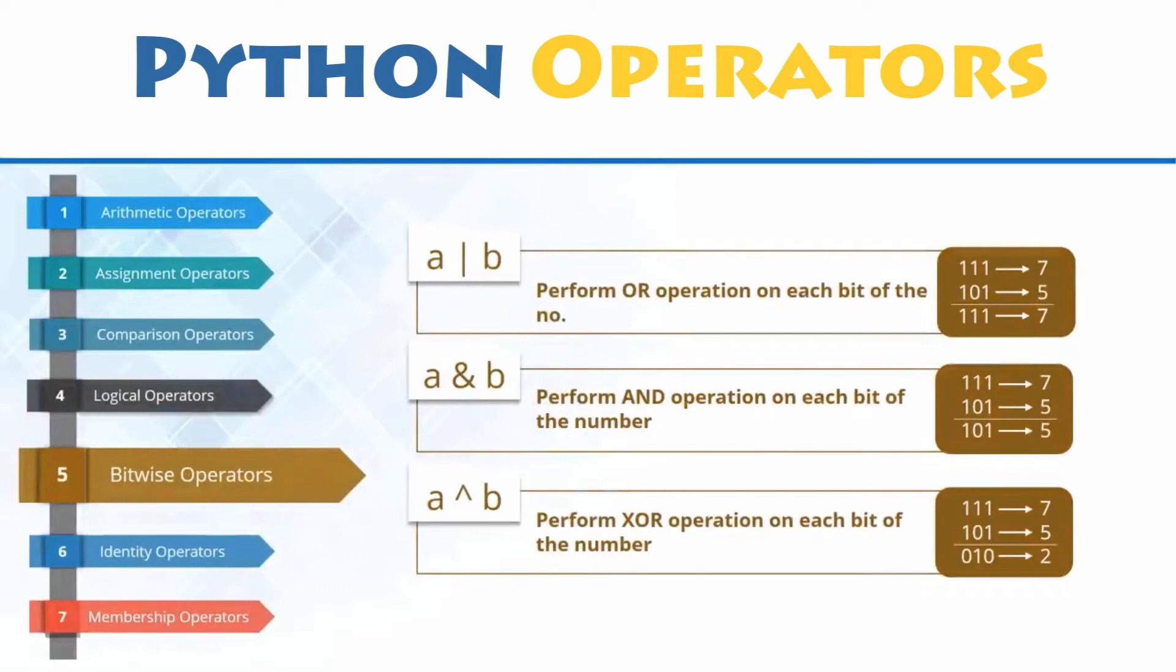When you perform an OR operation on these operands, it will give you the output 7, 111 in binary form, since you performed a logical operation on each bit of the numbers one at a time.